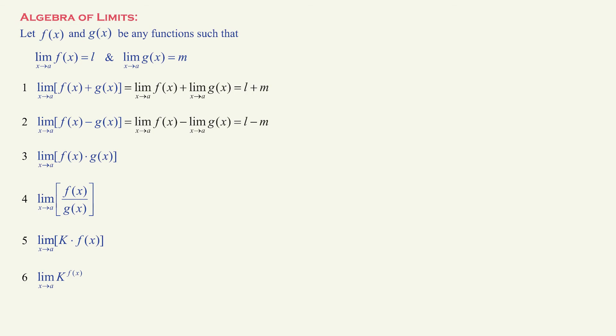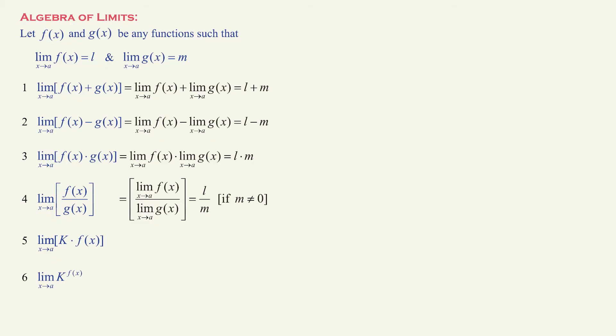For the product of f and g, limit can go to both — this simplifies to L times M. For division of f and g, limit goes to the variable, giving us L over M. With division comes the obligatory rule that the denominator should not equal zero. If the denominator is zero, then crazy things start happening, and we will discuss that as well as the indeterminate forms of limits shortly — not in this video though.